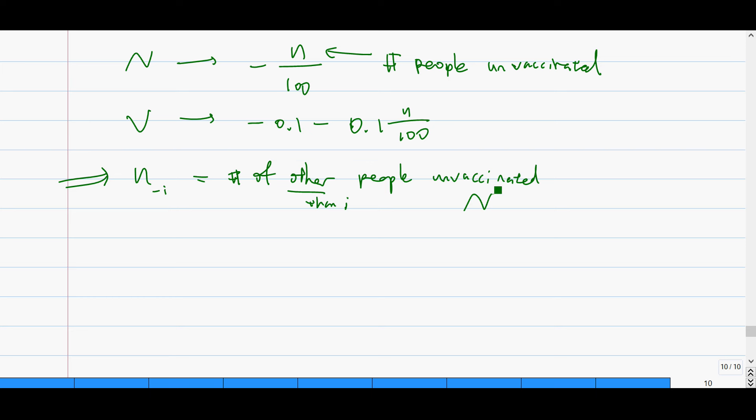So after you decide that, then you just write the best response function in terms of that. So some people ask me, can I use N minus i as the number of people who are vaccinated? Yes, of course. If you do it, you get the same answer. So it doesn't really matter what N minus i represents, as long as you state it clearly.